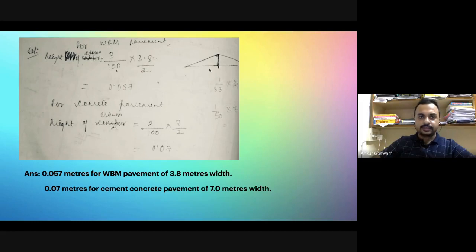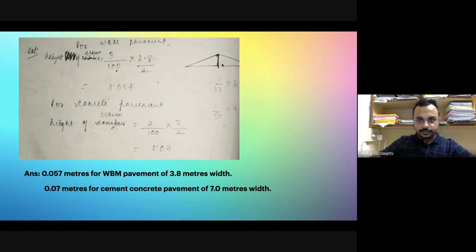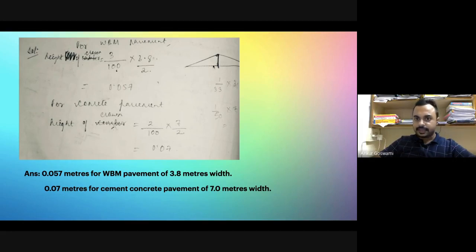Many students make the mistake of not dividing by two. This rise is divided by two — three point eight divided by two — because we are calculating the slope for this horizontal length, how much vertical will be there. The slope is mentioned as one in X, or X percentage. The answer obtained is zero point zero five seven meters.